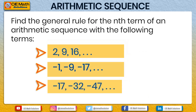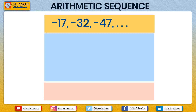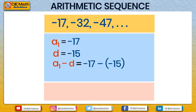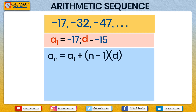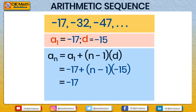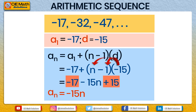For the third sequence containing −17, −32, and −47, a1 = −17 and d = −15. Using the shortcut: a1 − d = −17 − (−15) = −2. So the general rule is an = −15n − 2. Verifying with the formula: −17 + (n − 1)(−15) = −17 − 15n + 15 = −15n − 2. Confirmed.